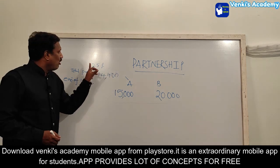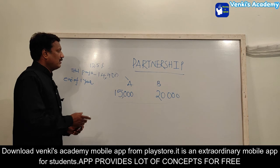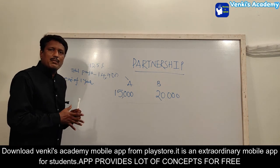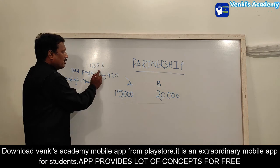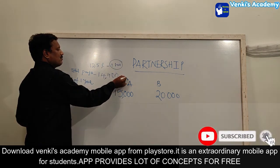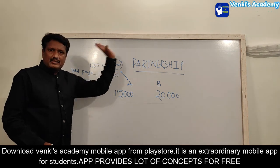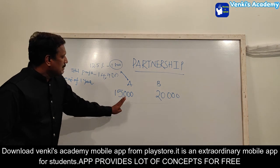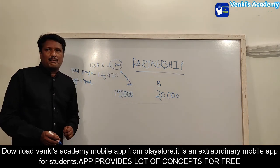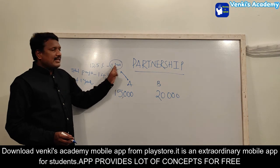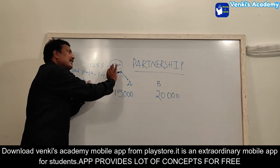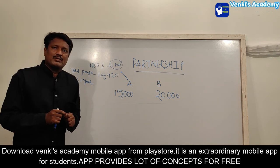First, the 4.5% commission comes out from the total 100% profit: 4.5% of 14,400 = 1800. This 1800 is A's personal salary/commission. After removing this, 12,600 remains. The remaining 87.5% of 14,400 — but effectively the remaining profit after 1800 is subtracted — equals 12,600, which is available for sharing.